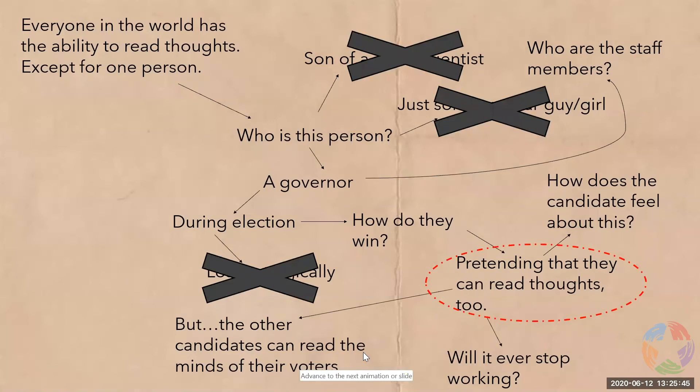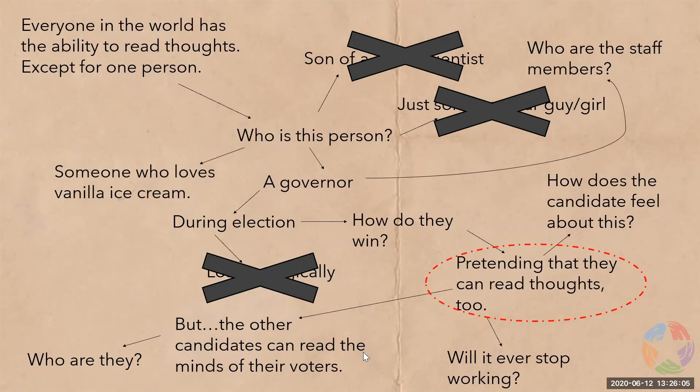Imagine a really picky reader who's going to tear your novel apart to find every single loophole. You have to find all those shortcomings before your reader does. And here's a trivial one: the candidate loves vanilla ice cream — that may become useful later.